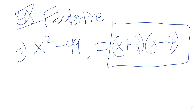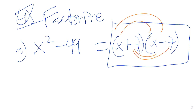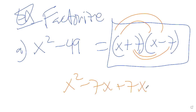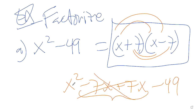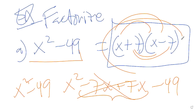Now, what if you were unsure if this is correct? What you can do is distribute. If you go X times X, you get X squared; X times negative 7 gives negative 7X. The inside gives you positive 7X, and in the back you get negative 49. Notice that the center terms eliminate, so you're left with X squared minus 49, which is where you started. That's how you know your answer was correct — if you foil it out, you get back the original expression.